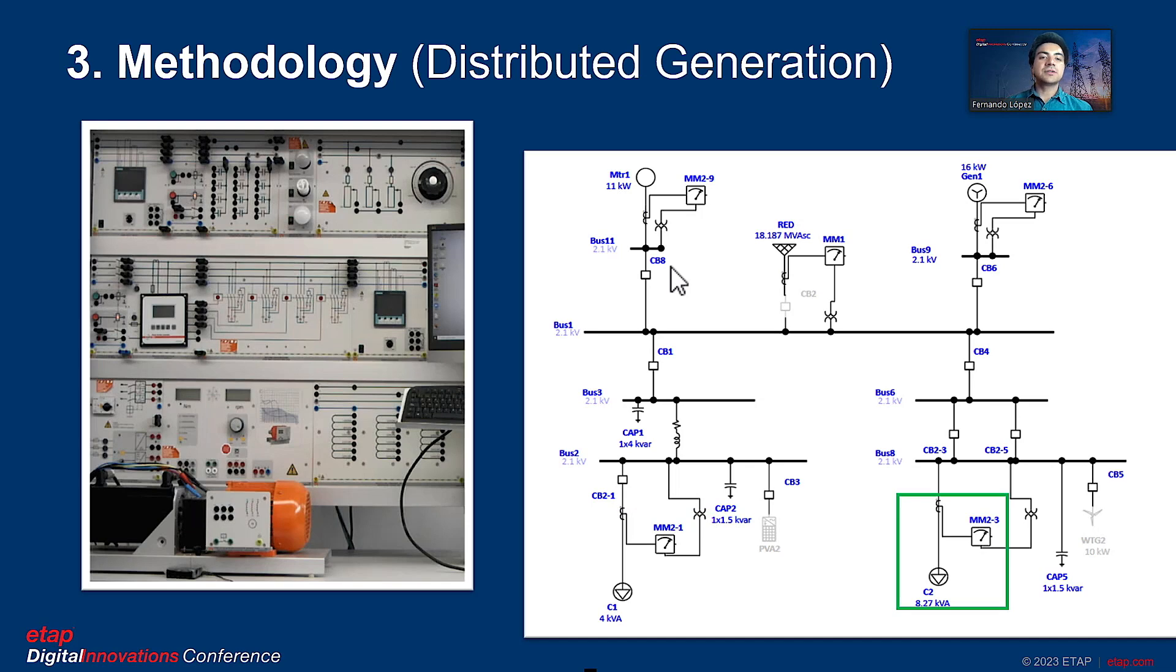The load C2 has resistance, inductance, and capacitance elements, and it also consists of a power quality controller which compensates for the reactive power to maintain the power factor at unity levels.